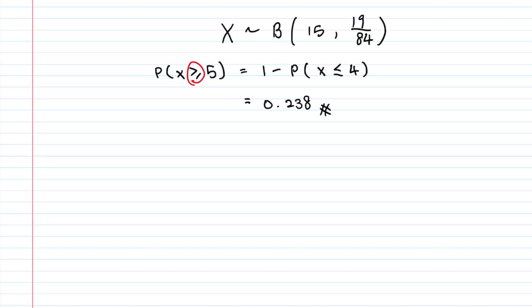That's all for this question — quite doable overall. The key thing to be careful about in part one is accounting for identical counters by dividing by the appropriate factorial when permuting. If you enjoyed this video, give it a like and subscribe. Leave any questions in the comments and I'll answer them. See you in the next one!